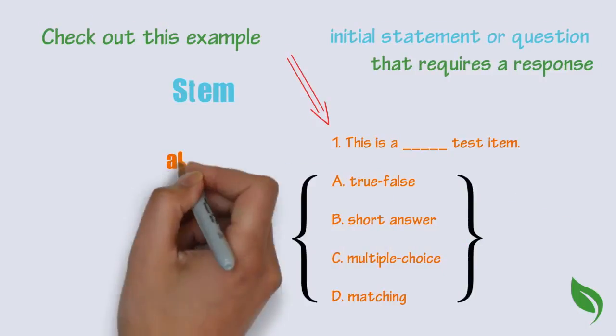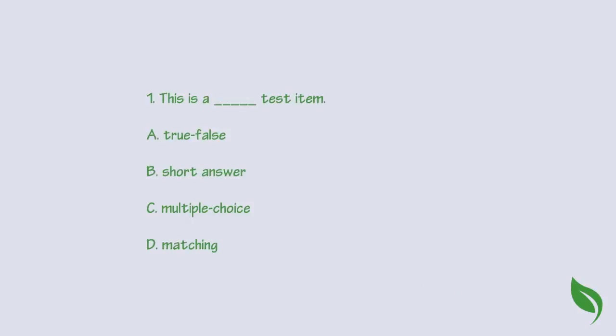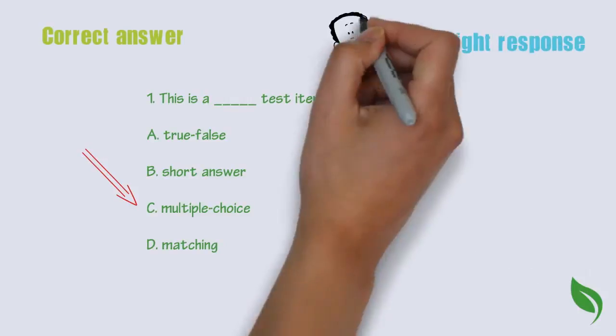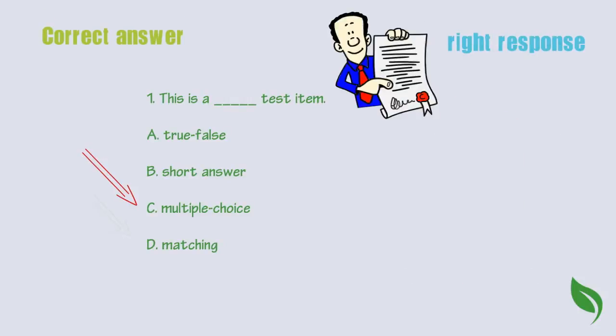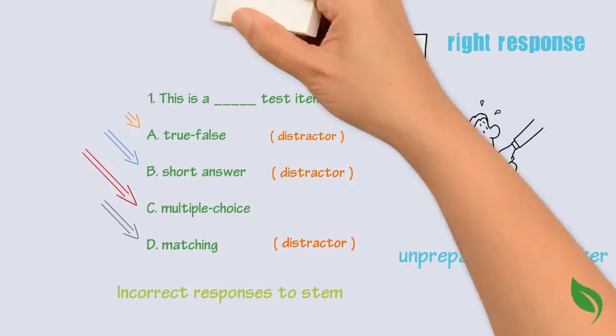These are called alternatives. They are the different response options to the stem. One of the alternatives is the correct answer. It's the right response to the stem. While the rest are called distractors. They are incorrect responses to the stem and serve to throw off the unprepared test taker.